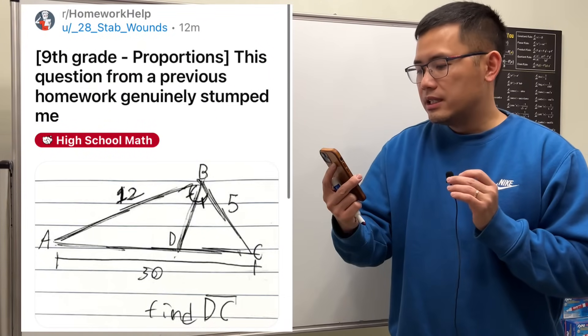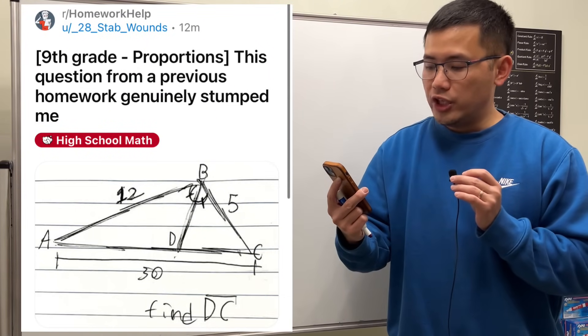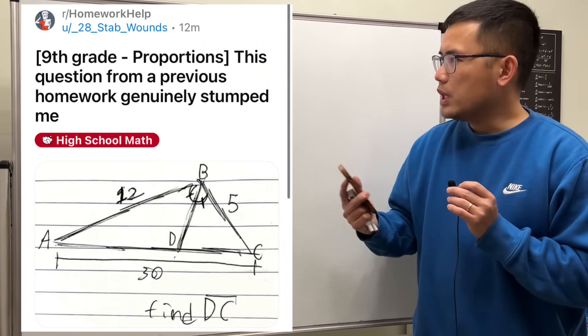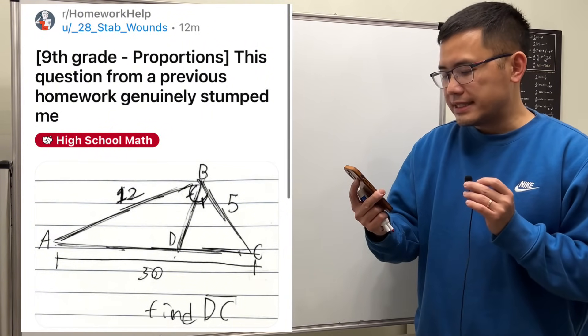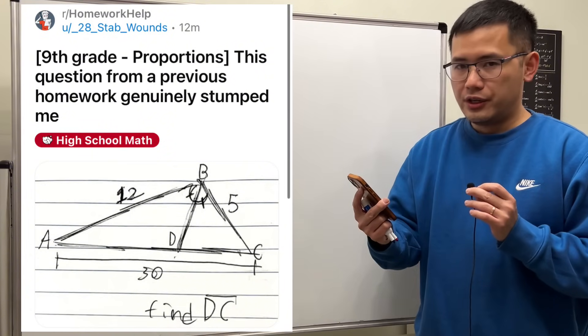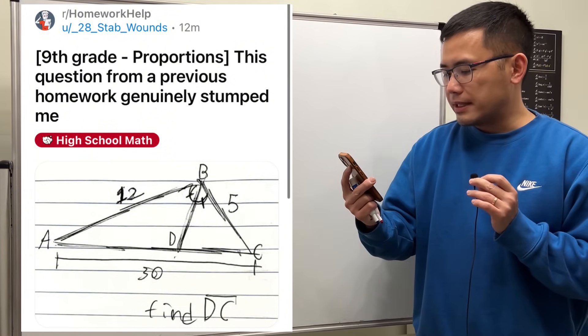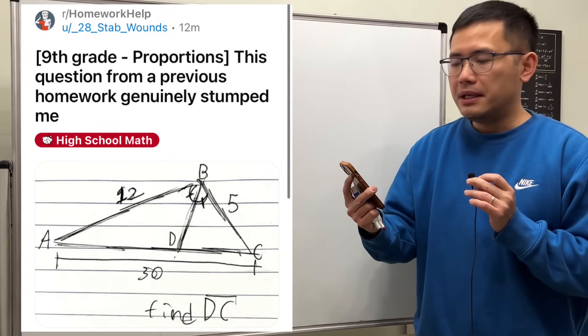9th grade proportions - this question from a previous homework genuinely stumped me. So here we have a triangle with sides 12, 5, and 30, and we see that BD is the angle bisector of angle ABC.